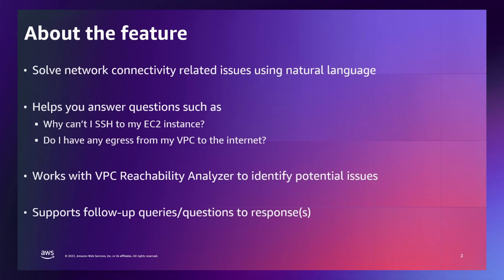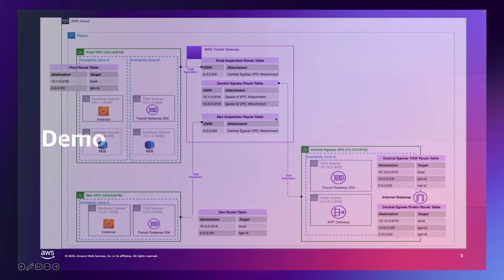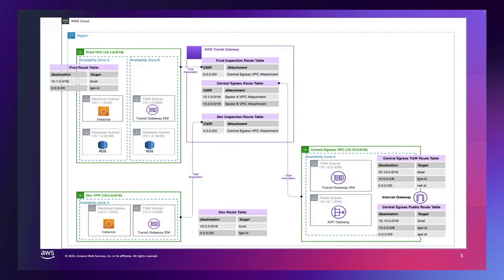I'll do the demo to show you how this particular feature works. For this demo, we'll use an architecture where I have a Production VPC, Development VPC, and Central Egress VPC. All internet-related traffic from Production and Development VPC goes via my Central Egress VPC. In this architecture, we are encountering two issues. The first is that my instance in the Production VPC is not able to connect to my RDS instance. The second issue is that instances in Production and Development VPC are not able to reach the internet via Central Egress VPC. Next, I'll go to my AWS console and use Amazon Q to troubleshoot these issues.